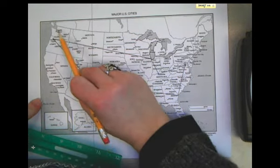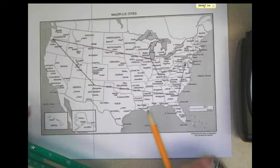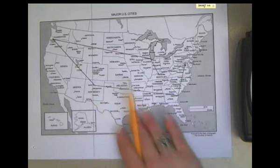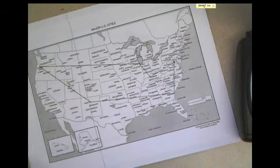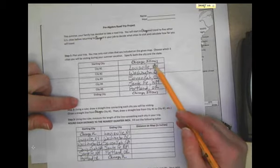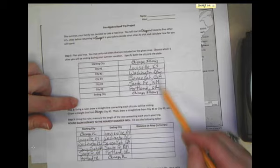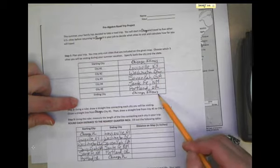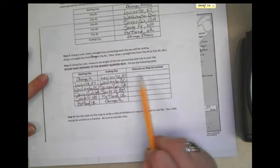So you're going to try not to go over any water. You're going to try to do it in an order that makes sense. And you can decide if you want to fill in the table first or the map first. That's totally up to you. So, literally, the first step is just choosing your five cities, make sure you put the state there too, your five cities with a start in Chicago and an end in Chicago.